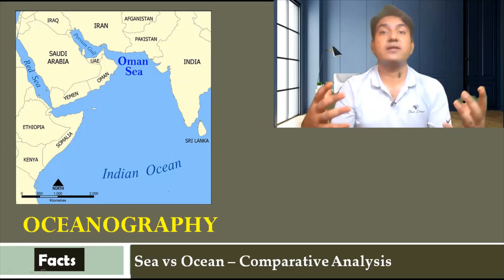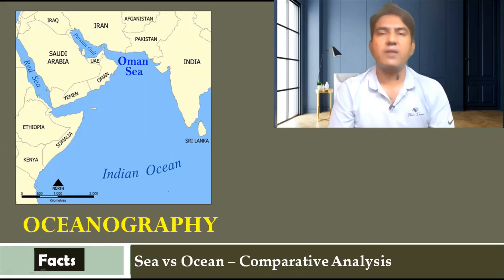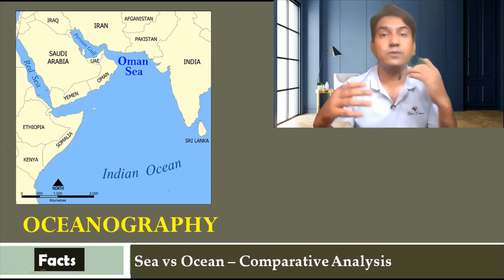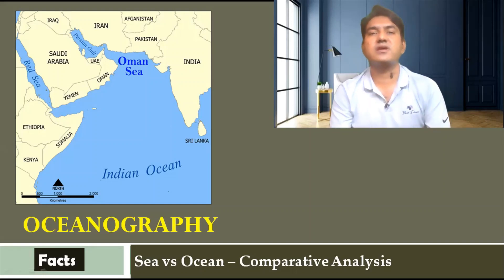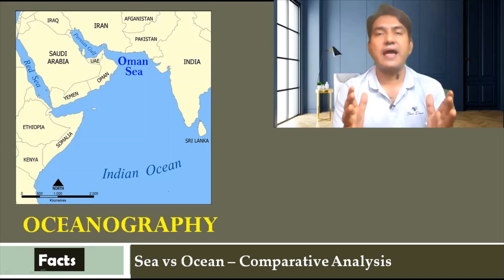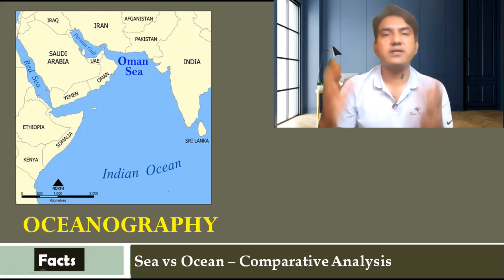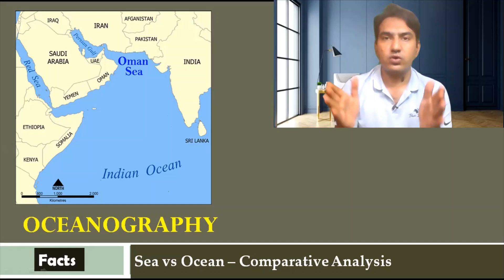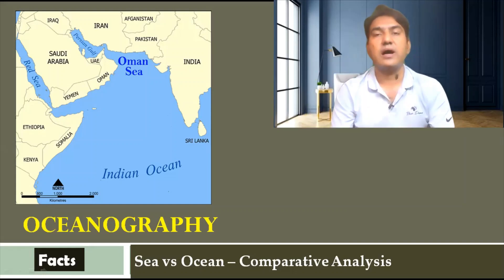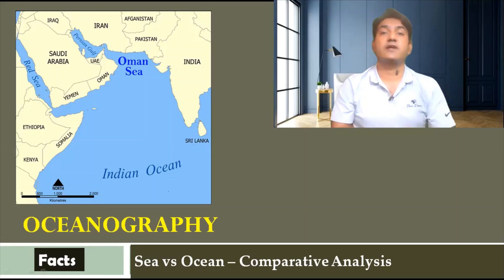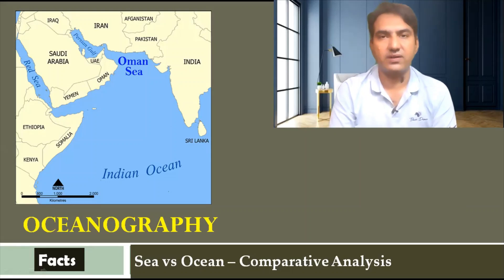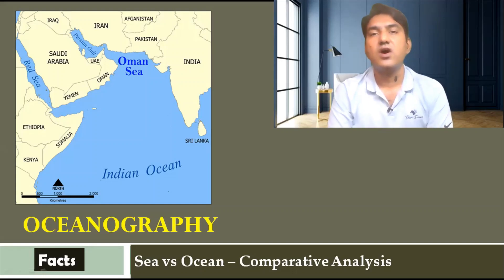Most of us know that carbon dioxide is accumulated in the atmosphere, but if you look at the oceans, most of the carbon dioxide is actually taken in by the oceans — more than what has accumulated in the atmosphere. Oceans also provide oxygen, which is very important for living organisms. So the oxygen also comes from the ocean.